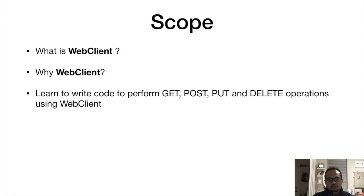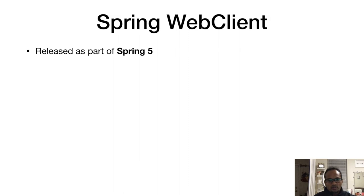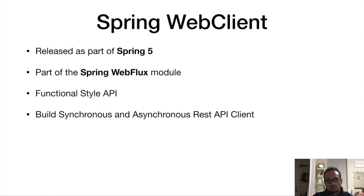Spring Web Client got released as part of Spring 5. It's part of the Spring Web Flux module. This is a functional style API. Using Web Client, you can build both synchronous and asynchronous REST API clients, but Spring Web Client is asynchronous by default.